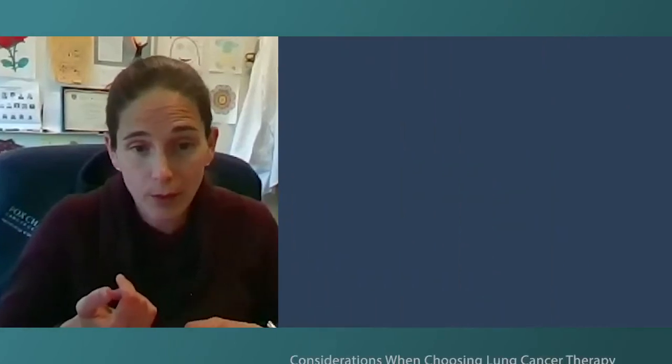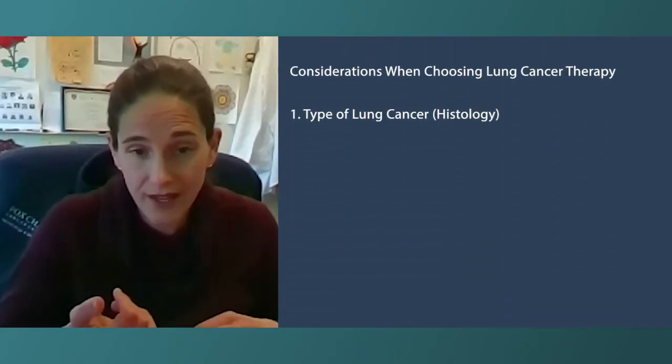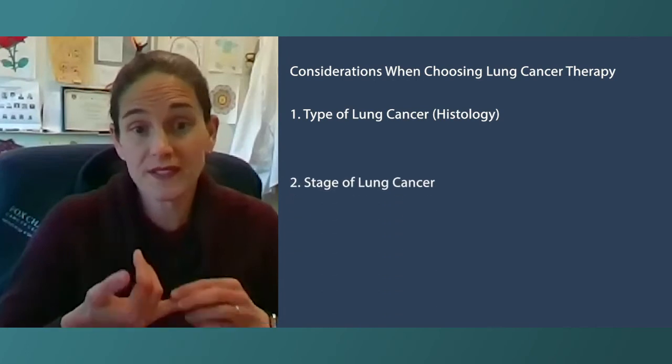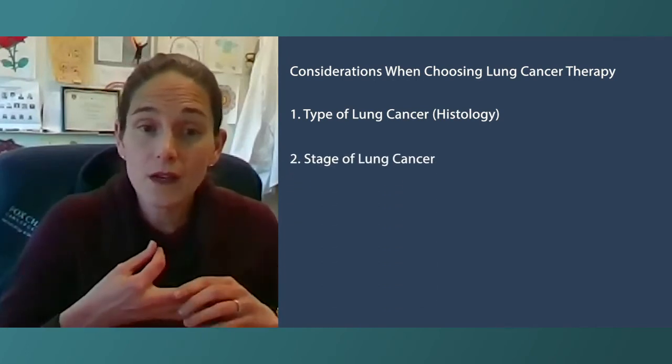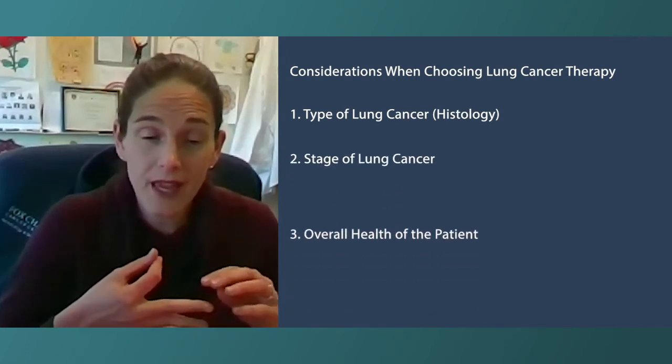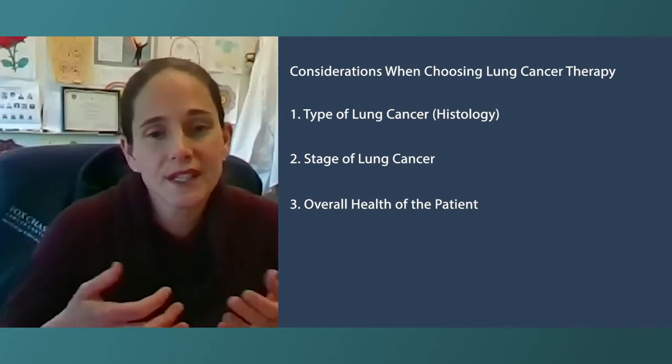When deciding on a treatment approach with the patient, what do you take into account? We take into account all the things we've been discussing. Number one, most important, is the histology — what kind of cancer it is. Number two is the stage. And number three is the health characteristics of that patient.